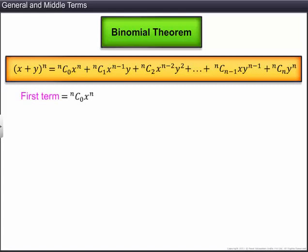The first term in the expansion is nC0 into x raised to the power n. The second term is nC1 into x raised to the power n minus 1 into y and so on. Following the same pattern, any required term in the expansion can be obtained.